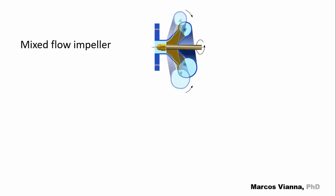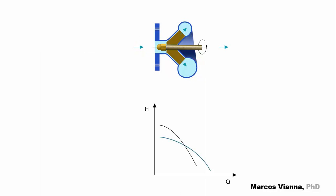Let's tilt the impeller a little more. It behaves even more as a mixed flow impeller. The water keeps coming parallel to the axis, but goes out at an angle from the axis like this. The characteristic curve changes again. Now the flow keeps increasing and the head keeps getting smaller.